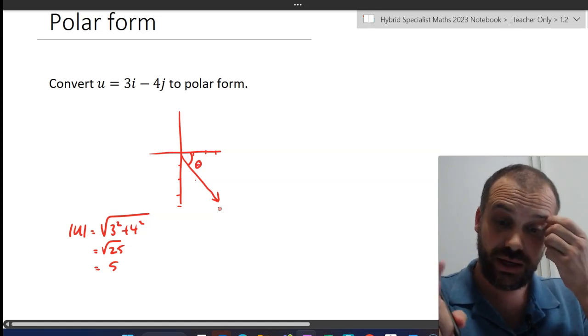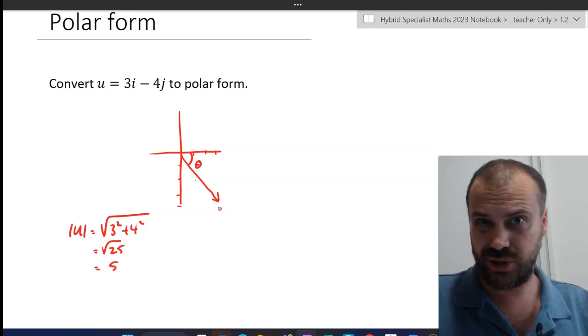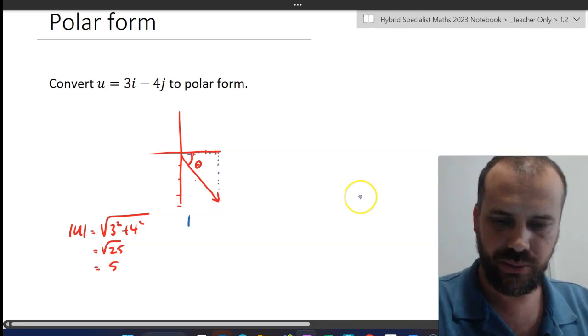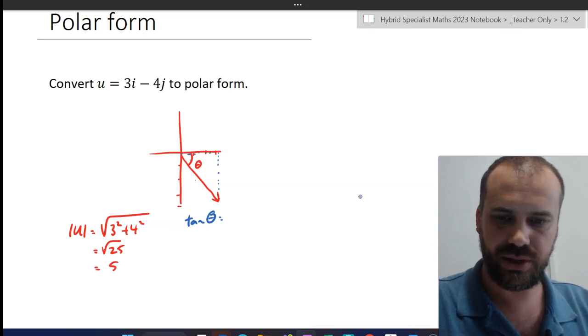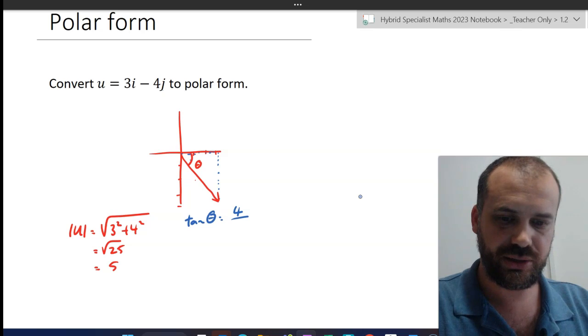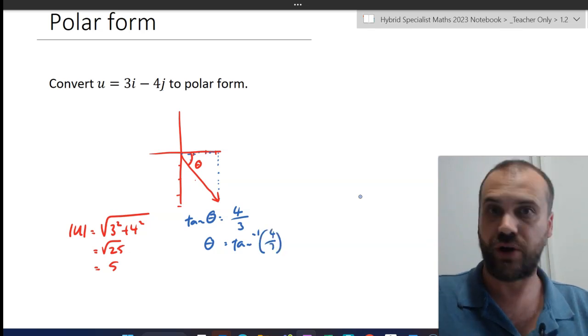right here and to do that you're going to have to cast your mind back to doing some trigonometry, SOHCAHTOA type stuff maybe. This particular one we have tan theta equals the opposite side. Now the opposite side is our j component here, 4 over the adjacent side which is the one next door, 4 over 3 and then you solve for theta.